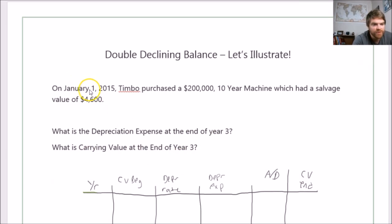So, on January 1st, 2015, Timbo purchased a $200,000, 10-year machine which had a salvage value of $4,600.